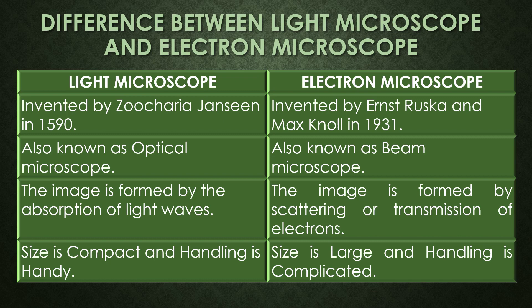If the image is formed by scattering, the electron microscope is referred to as the scanning electron microscope, and if the image is formed by the transmission of electrons, that microscope is called the transmission electron microscope.